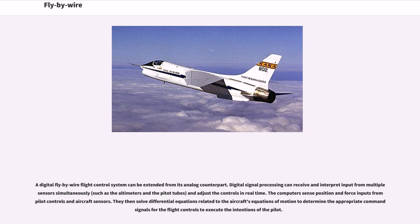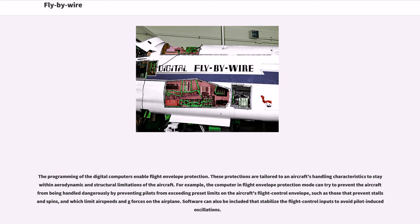A digital fly-by-wire flight control system can be extended from its analog counterpart. Digital signal processing can receive and interpret input from multiple sensors simultaneously, such as altimeters and pitot tubes, and adjust the controls in real time. The computers sense position and force inputs from pilot controls and aircraft sensors, then solve differential equations related to the aircraft's equations of motion to determine the appropriate command signals for the flight controls to execute the intentions of the pilot.